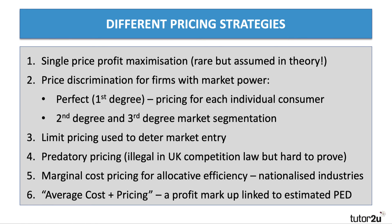Some businesses operate on simple rules of thumb — they work out their average cost or unit cost and then add a profit markup. This is basically average cost pricing, where the markup is linked to the estimated elasticity of demand. When demand is price inelastic, you can typically charge a higher markup; when demand is more price elastic, you go for sales volume rather than a big profit per unit.